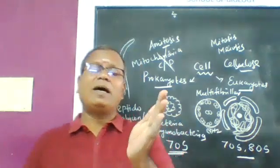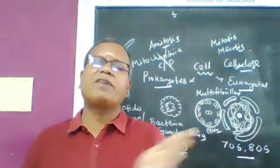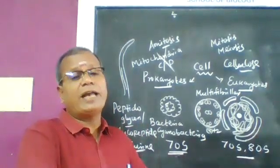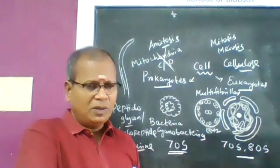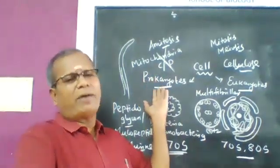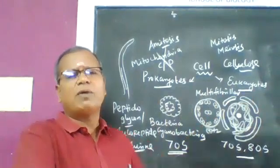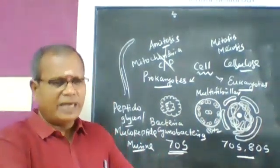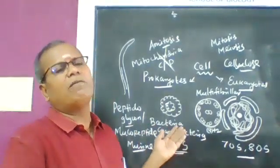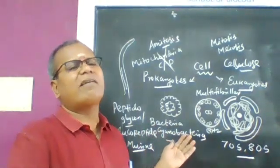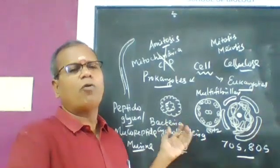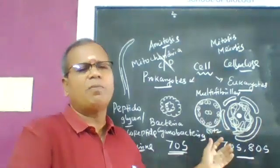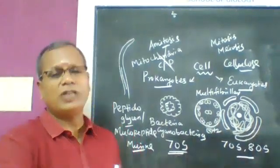To summarize the differences: prokaryotes have an incipient nucleus while eukaryotes have a well-defined nucleus. Double membrane organelles are absent in prokaryotes but present in eukaryotes. Prokaryotes have 70S ribosomes; eukaryotes have both 70S and 80S. Amitotic division occurs in prokaryotes; mitotic and meiotic division in eukaryotes. The reserve food material in prokaryotes is glycogen, volutin, oil droplets, or fat crystals, while plant cells store starch and animal cells store glycogen.